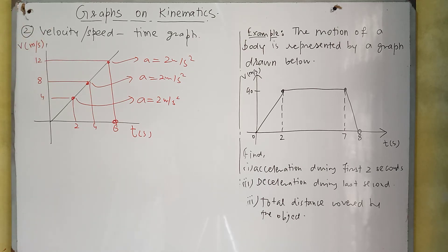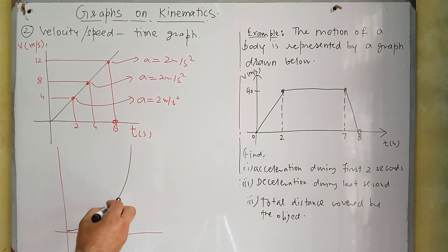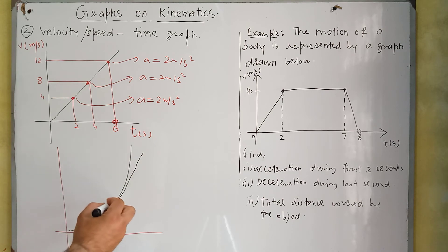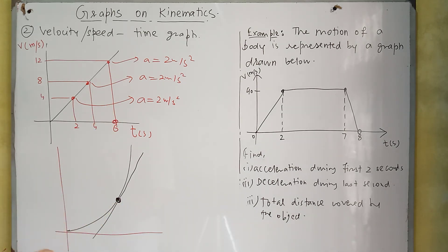Now if we have a graph in which a body is moving with non-uniform acceleration, the graph will be a curve. Just like in the distance-time graph when the body was moving with non-uniform velocity and we calculated velocity by drawing a tangent, similarly in a velocity-time graph with non-uniform acceleration, if we need to find acceleration at a particular point, we draw a tangent at that point and calculate the gradient of that tangent. The value of the gradient will be the acceleration of the body at that particular point.